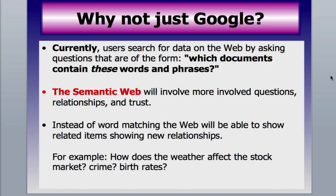Why not just Google? People say the web is fine — I can find anything with the right search string. But basically, when you're doing a Google or any other search, you're just doing phrase matching: which documents contain these words or phrases? That's a very low-level, unintelligent type of searching. The semantic web involves more complex questions, relationships, and trust — showing how different things relate to each other. You'll be able to discover things like how weather affects the stock market or crime rates.